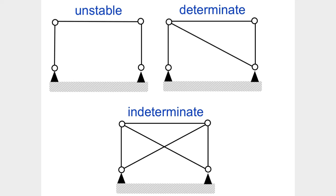Consider three examples of pin-jointed trusses, where members are free to rotate at their joints. The first system is unstable because it doesn't have enough unknown reactions — only two unknowns but three criteria to satisfy. The second system is statically determinate, where the number of unknowns and equations match. Adding another unknown makes the system indeterminate, with more unknowns than equations.